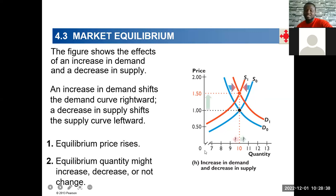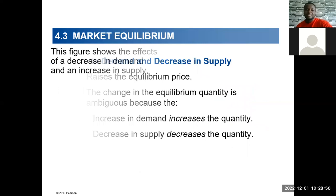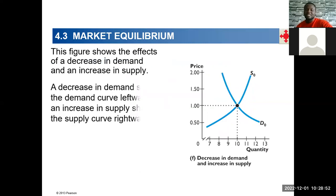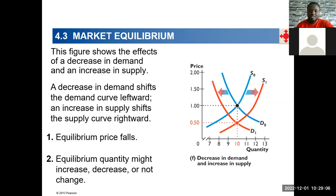So when demand increases and supply falls, price will go up, but quantity is ambiguous — it can decrease, increase, or even remain the same. Now the last case: a decrease in demand and an increase in supply. Just know how to draw the diagram and see the effects from there.